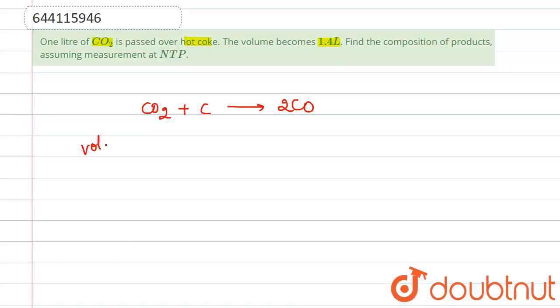If we take volume as V, so volume of CO2 will be V, for carbon this will be V, and for 2CO this will be 2V. So one mole of CO2 is combining with one mole of carbon to give 2CO.